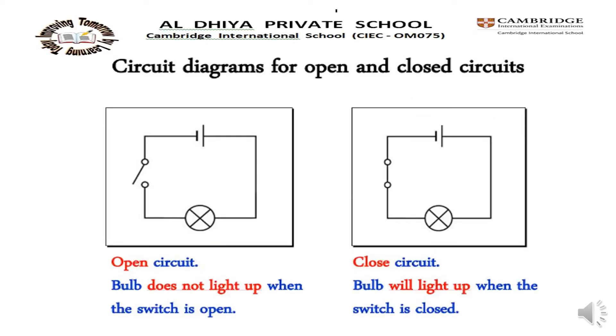This is the circuit diagram for open and closed circuit. In the first picture, we can see the open circuit. The bulb does not light up when the switch is open.